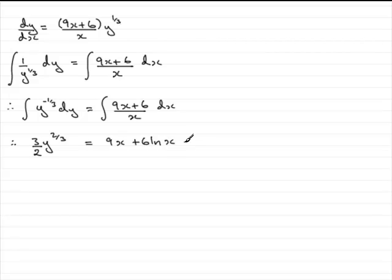You're going to have a constant of integration on this side and this side, but if you subtract this constant from this one, you get a constant which we'll call c. I'm going to label this equation number 1.